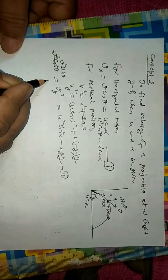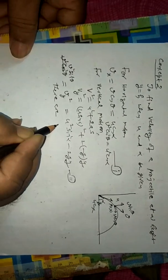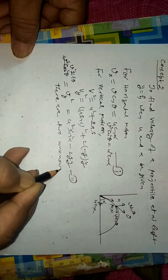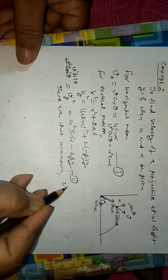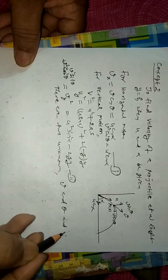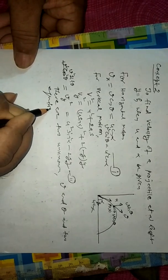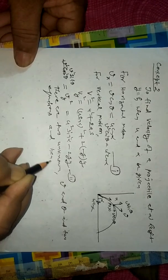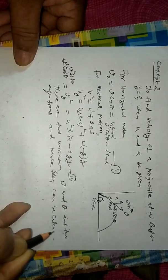Here, there are two unknowns v and theta, and two equations. And hence, they can be calculated.